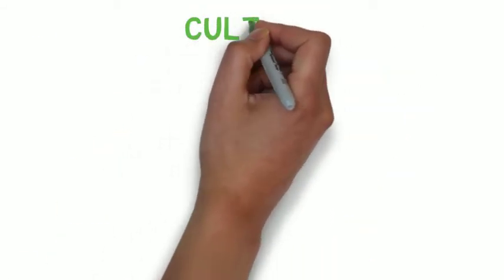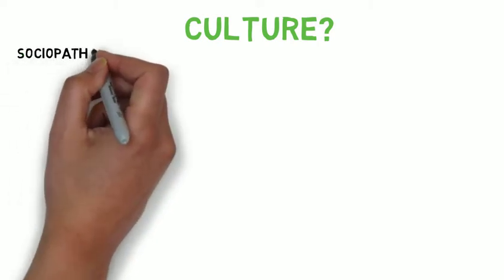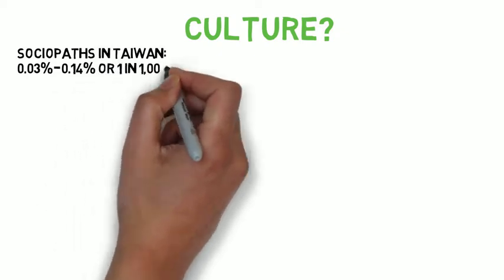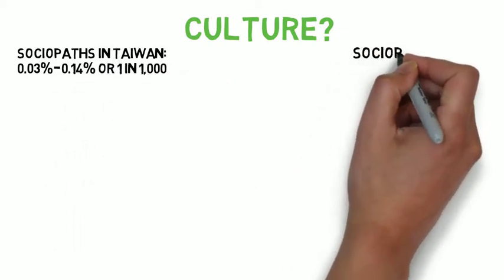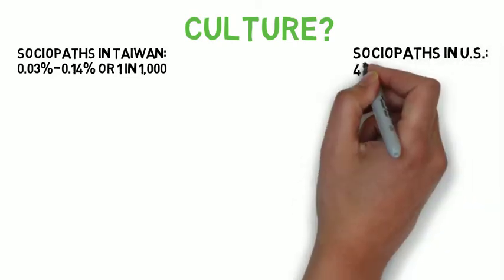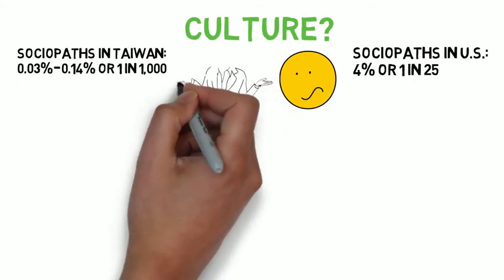Another possible factor that experts have proposed is the effect of culture on sociopaths. According to the statistics, sociopathy is relatively uncommon in certain East Asian countries like Taiwan, Japan, and China. Only about a tenth of a percent of the population, or one in a thousand people in Taiwan suffer from antisocial personality disorder compared to the four percent of the US population. Although similar to the nature and nurture arguments, there's only a limited amount of solid evidence to support the culture argument.